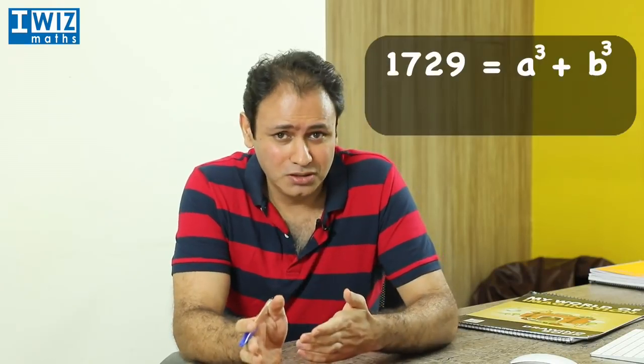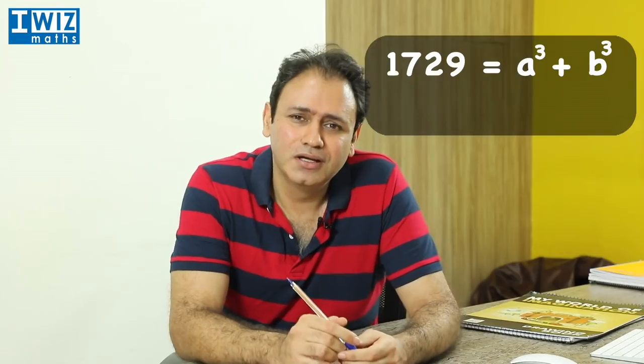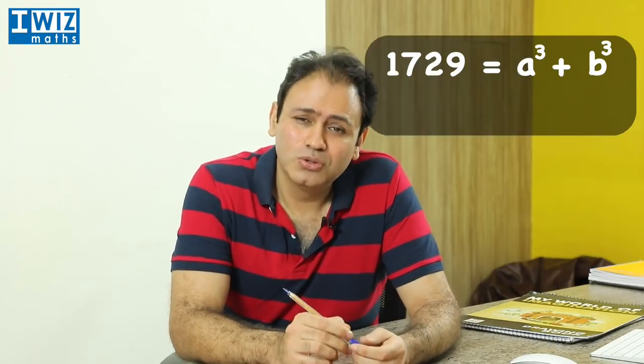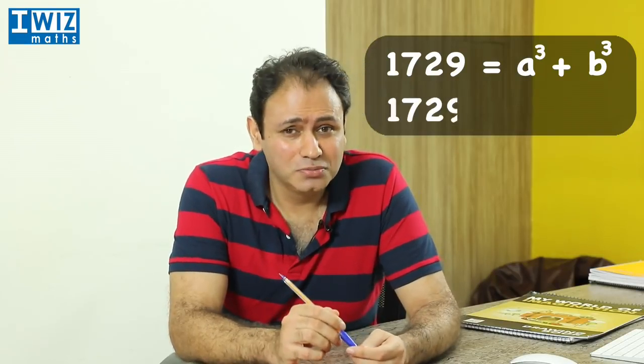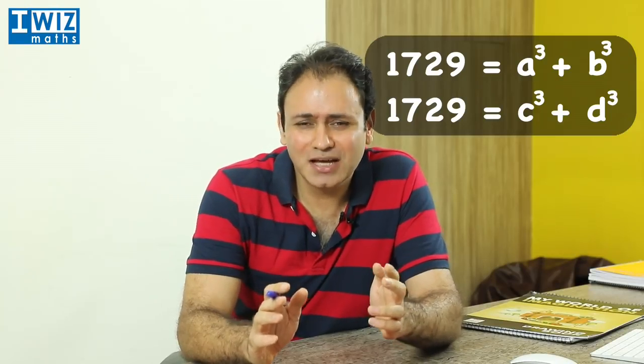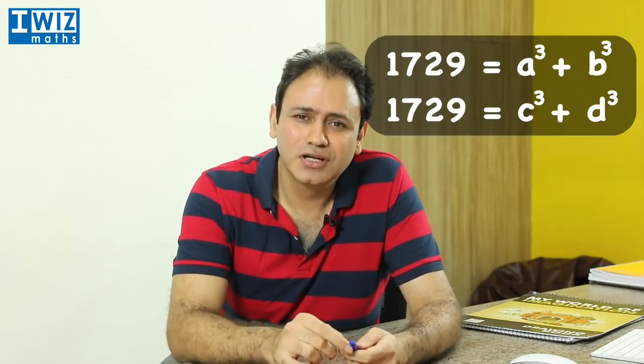Let's explain what that means. What that essentially means is that 1729 can be written as, say, A cubed plus B cubed, where A and B are numbers, but it can also be written as C cubed plus D cubed, where C and D are different numbers. So essentially, it can be written as the sum of two cubes in two different ways.